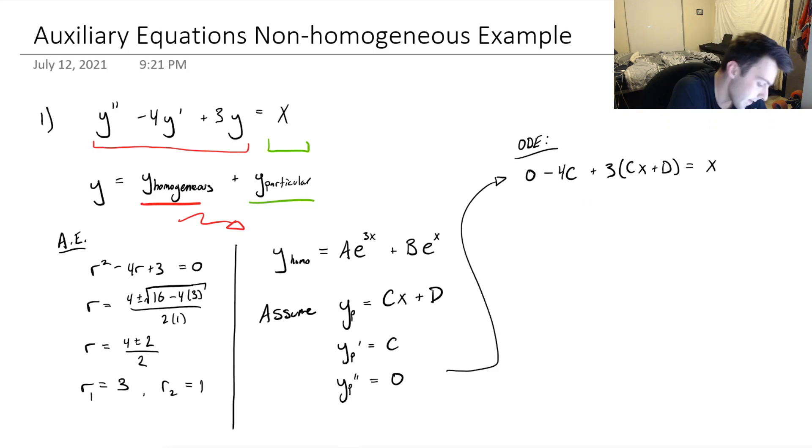So we have minus 4C plus 3CX plus 3D. And this looks a little bit confusing right now. But it's really not that bad. You'll notice here, we've got a constant, some constant, 3C times X. And then we've got plus, and then 3D minus 4C.